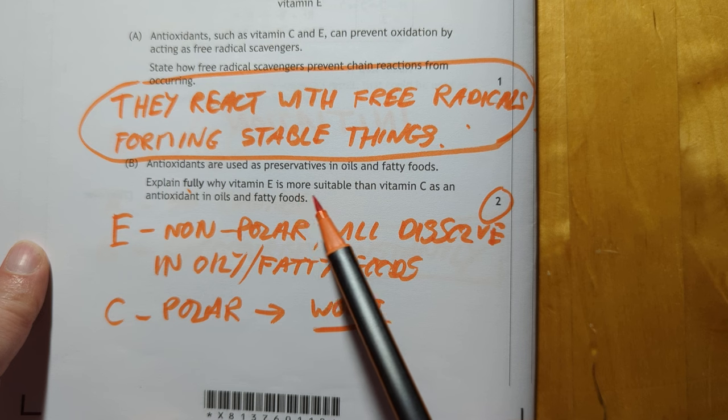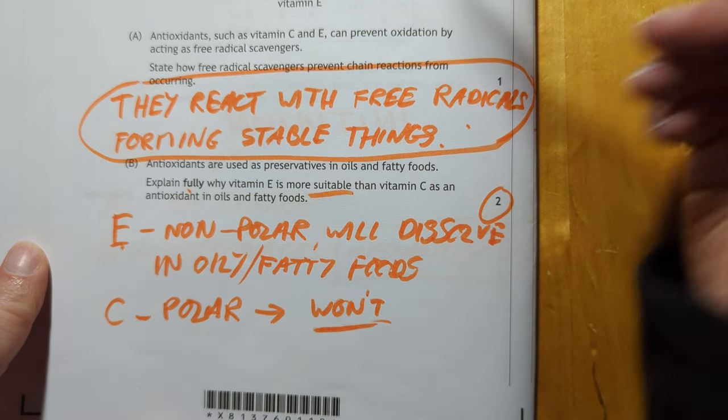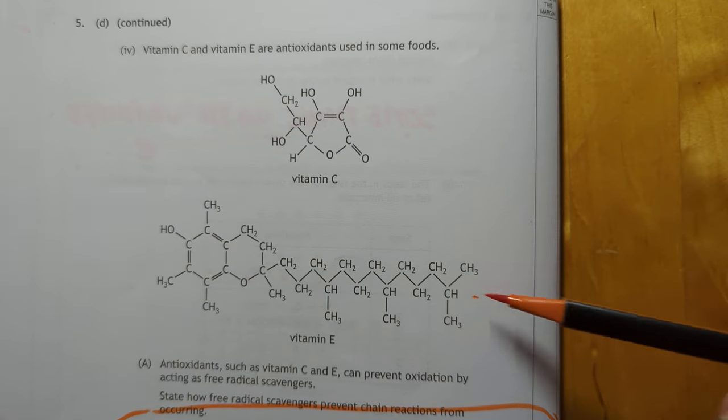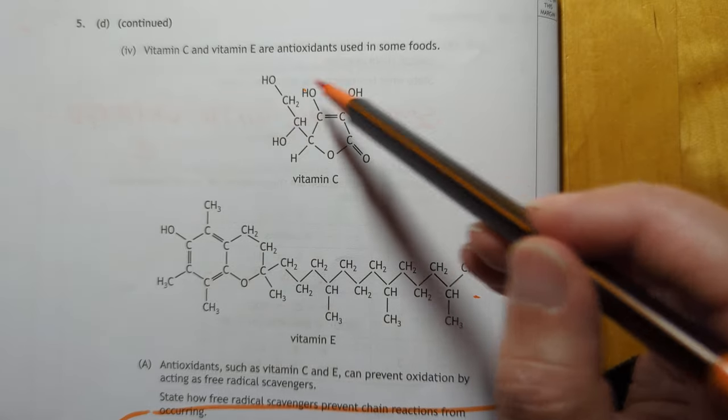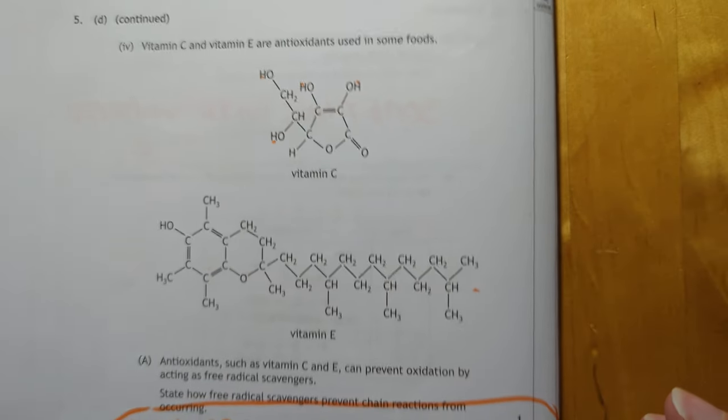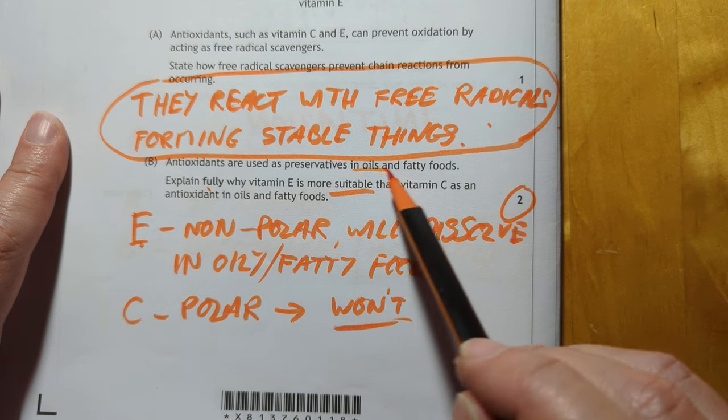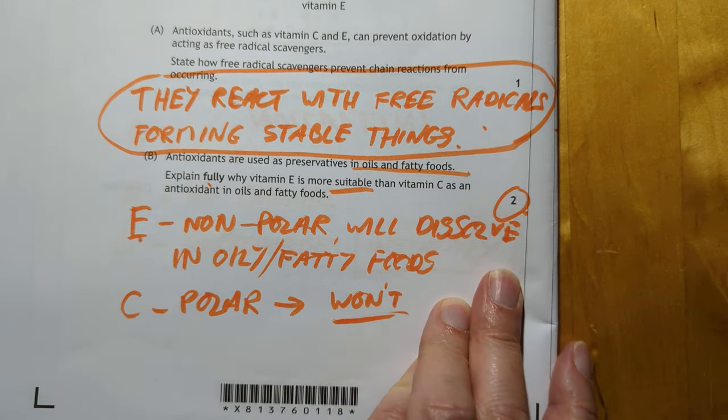Explain fully why vitamin E is more suitable than vitamin C. Vitamin E, according to the diagrams off the page, as you can see, is entirely non-polar, and therefore will dissolve very well in oily or fatty foods. Vitamin C has got multiple OHs, and therefore is nice and polar, and will not dissolve in your oils and fatty foods. Goodness knows how they're going to allocate that.